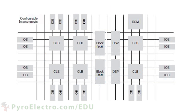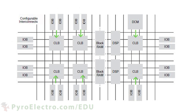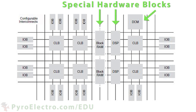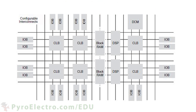FPGAs share a similar internal structure as CPLDs, with input and output blocks as well as internal complex logic blocks. But they also contain specific hardware modules, like blocks of RAM for holding data and DSP multipliers for doing complex math. FPGAs, unlike CPLDs, do not have onboard memory, so every time they are powered up, they need to be reprogrammed with a configuration image.